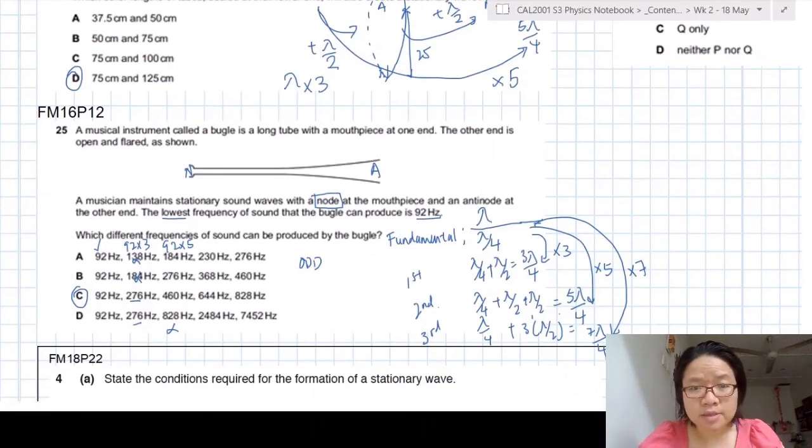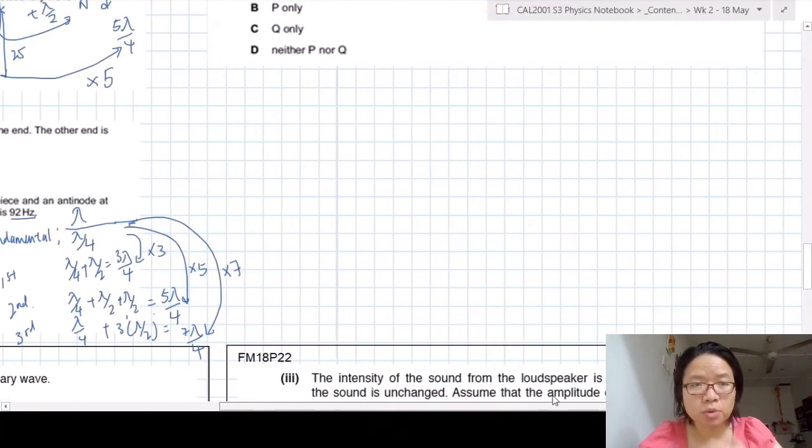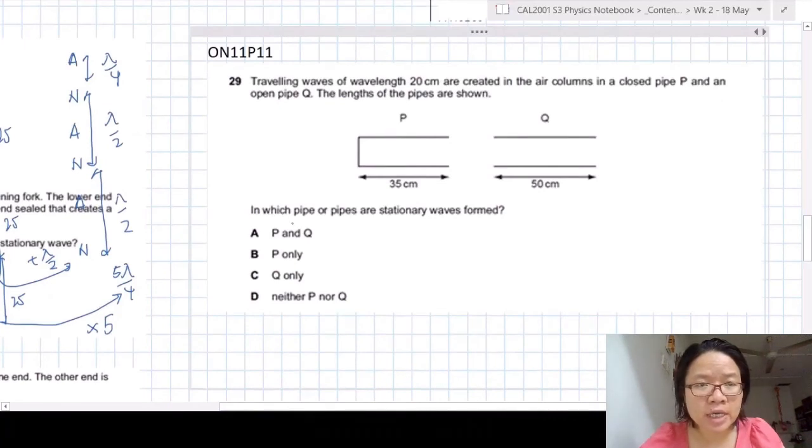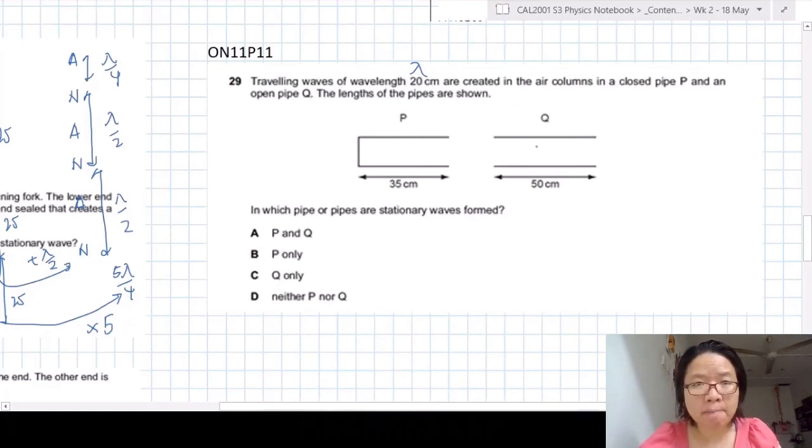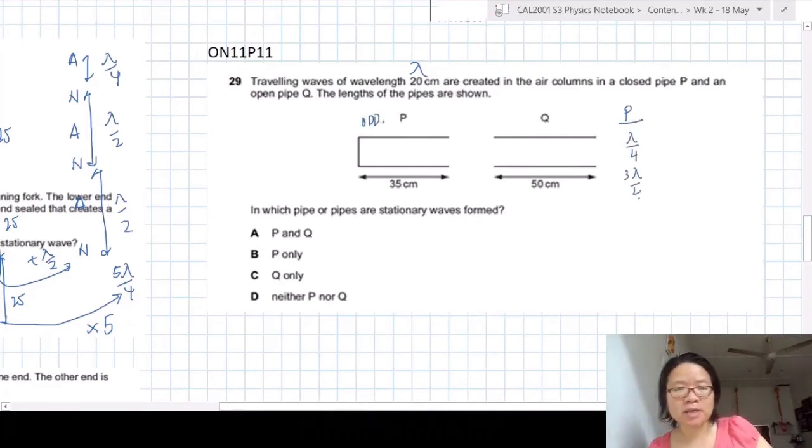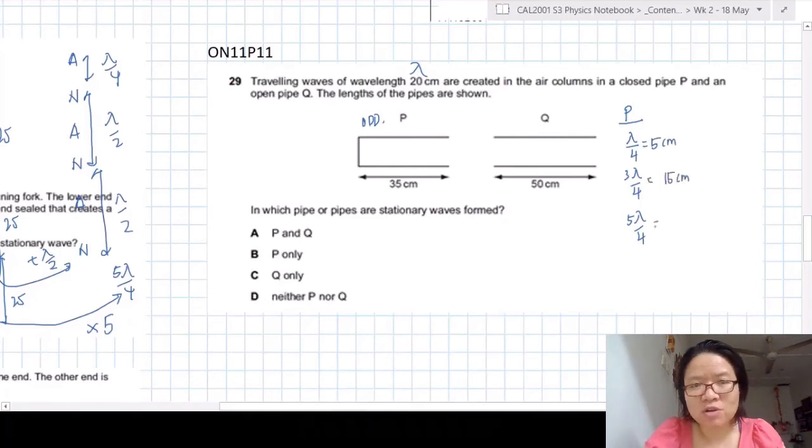The next example that we will look at is this one. So you have two pipes, P and Q, and you are given the wavelength 20 cm. One is closed end, one is open end. So in which pipes are stationary waveform. So I think by now you should identify that, hey, P is odd harmonics. So 1, 1, 3 over 4, 1 over 4, 5 over 4. So we know lambda as 20 cm. So you can test all the lambdas appropriately. Substitute 20 cm. You will get 5, 15, 25, 35. In this case, 35 is possible.